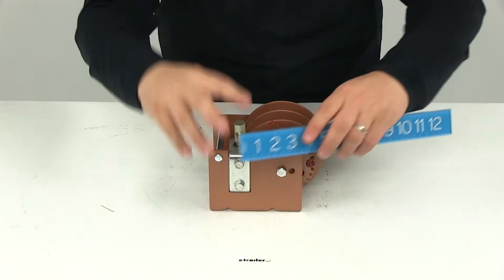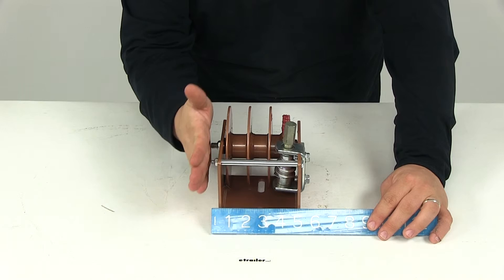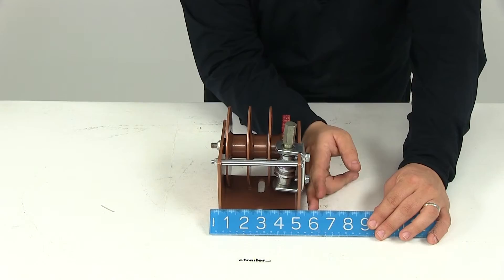Now the actual winch measuring from edge to edge that's going to give us a measurement of about seven and one-quarter of an inch in that direction and edge to edge in this direction just measuring from the outermost part of the hardware on each side that's going to give us a measurement of about five and three-quarters of an inch.